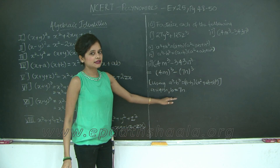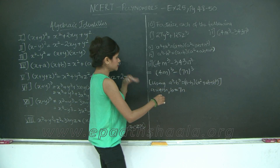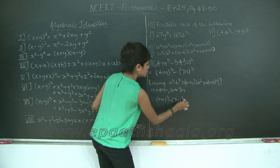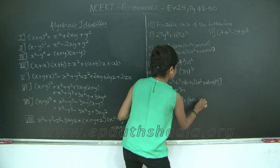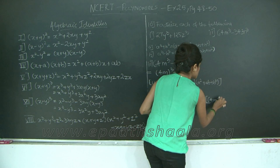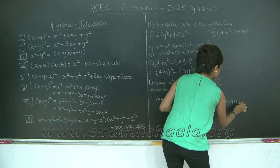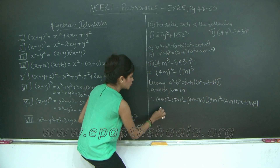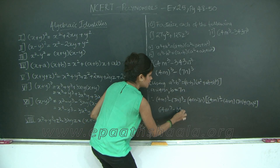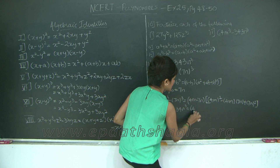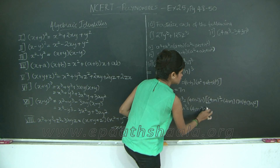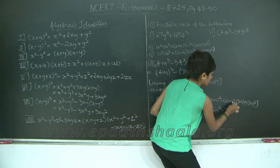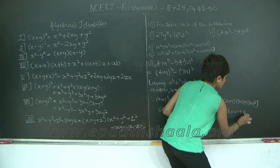Let us substitute a equal to 4m and b equal to 7n into our formula. Therefore, 4m the whole cube minus 7n the whole cube is equal to 4m minus 7n into 4m the whole square plus 4m into 7n plus 7n the whole square. Expanding the brackets: 64m cube minus 343n cube is equal to 4m minus 7n into 16m square minus 28mn plus 49n square.